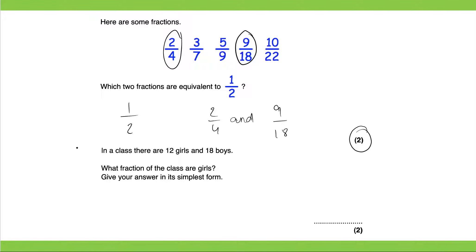In a class there are 12 girls and 18 boys. What fraction of the class are girls? Give your answer in its simplest form. So if there's 12 girls and 18 boys, the total of the class would be equal to 12 plus 18. That would be equal to 30.